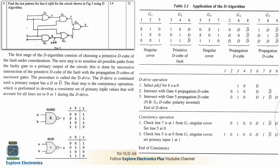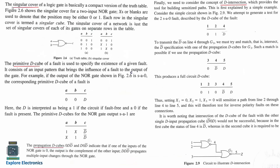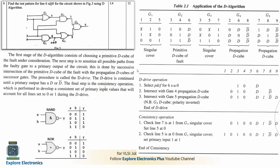The next problem: find the test pattern for line 6 stuck-at 0 in the given circuit using the D-algorithm. The D-algorithm involves four steps: understanding the singular cover of a logic gate, the primitive D cube of a gate, the propagation D cubes, and D intersection. We assume fault line 6 is the output of NAND gate G2, and write the primitive D cube for the faulty line.